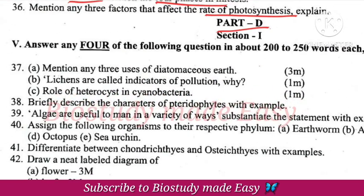This is Part D. Uses of diatomaceous earth. Lichens are pollution indicators because lichens cannot survive in polluted areas — they only grow in a clean environment. Role of heterocyst is nitrogen fixation.